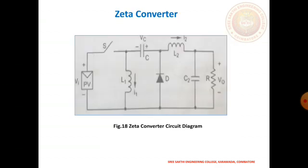Next topic: zeta converter. Figure 18 shows the basic circuit diagram of a zeta converter. The operation can be explained in two modes: switch ON and switch OFF. When the switch turns on, the diode becomes reverse biased due to the negative potential applied across it, blocking current. The energy stored in the capacitor is transferred to inductor L2, while L1 stores energy from the source.